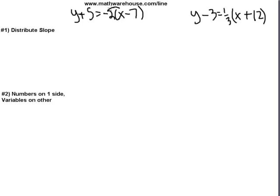So we need to distribute this negative 2 to both of these guys. So you end up with y plus 5 equals negative 2x. Negative 2 times negative 7 is positive 14.